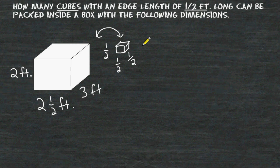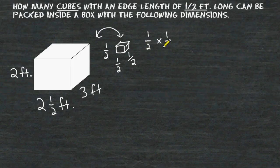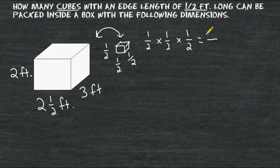The first thing we should realize is that the length, the width, and the height of the cube all have a length of one half of a foot. So to find the volume of this cube we multiply one half times one half times one half. Multiplying all the numerators together gives us one, and multiplying the denominators together gives us a product of eight. So the volume of the small cube is equal to one eighth of a cubic unit.